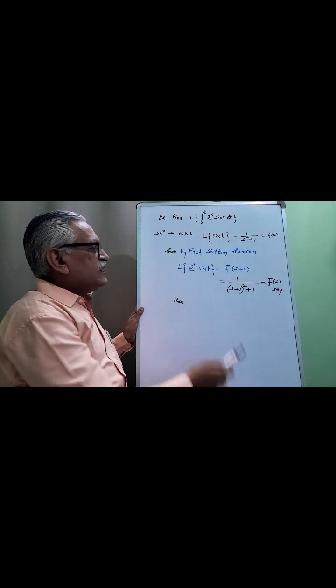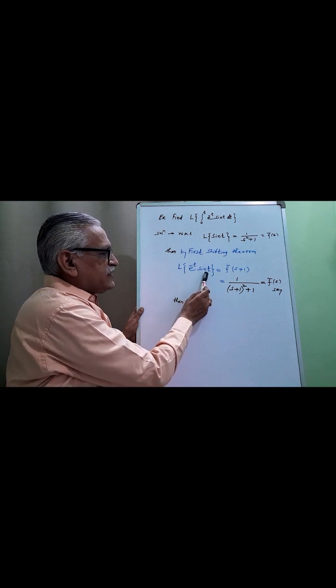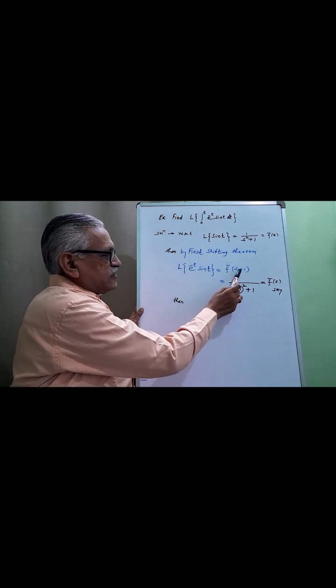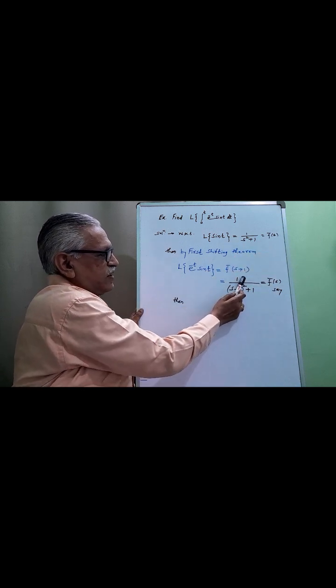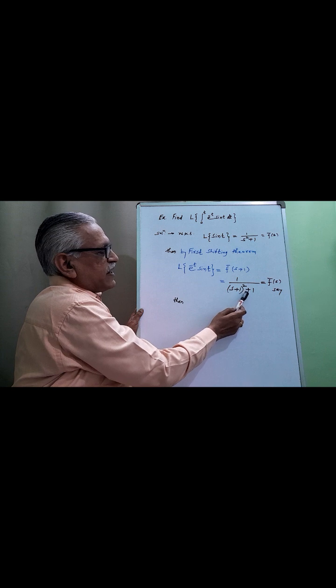Then by the first shifting theorem, the Laplace transform of sine t multiplied by e raised to minus t requires us to replace s by s plus 1 in this result. Therefore it becomes 1 upon (s plus 1) square plus 1.